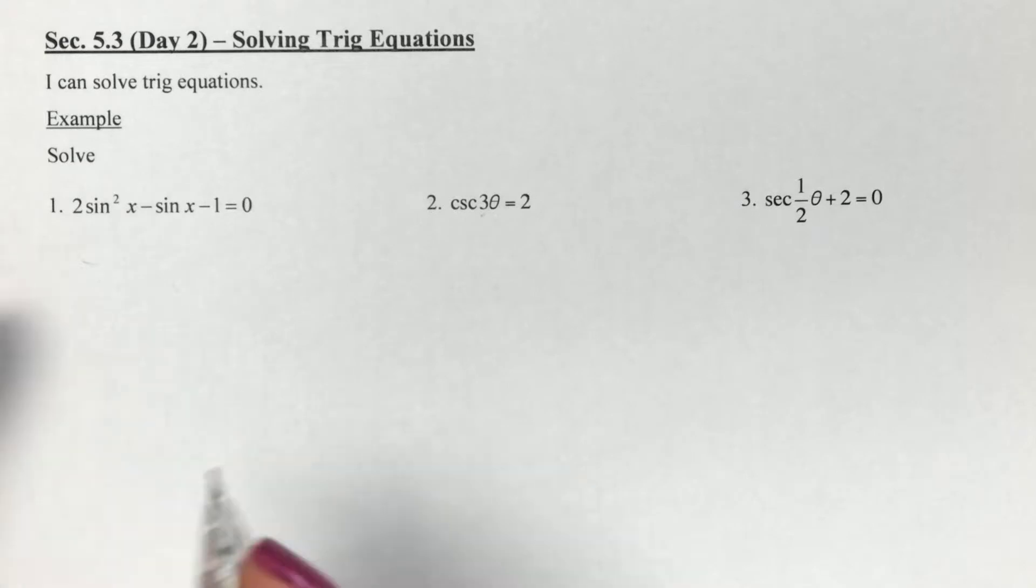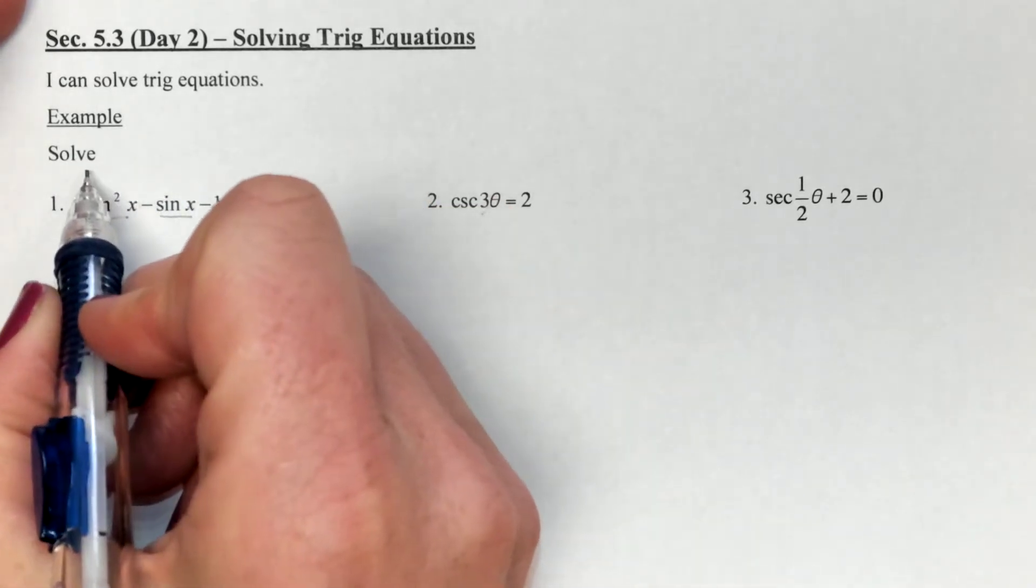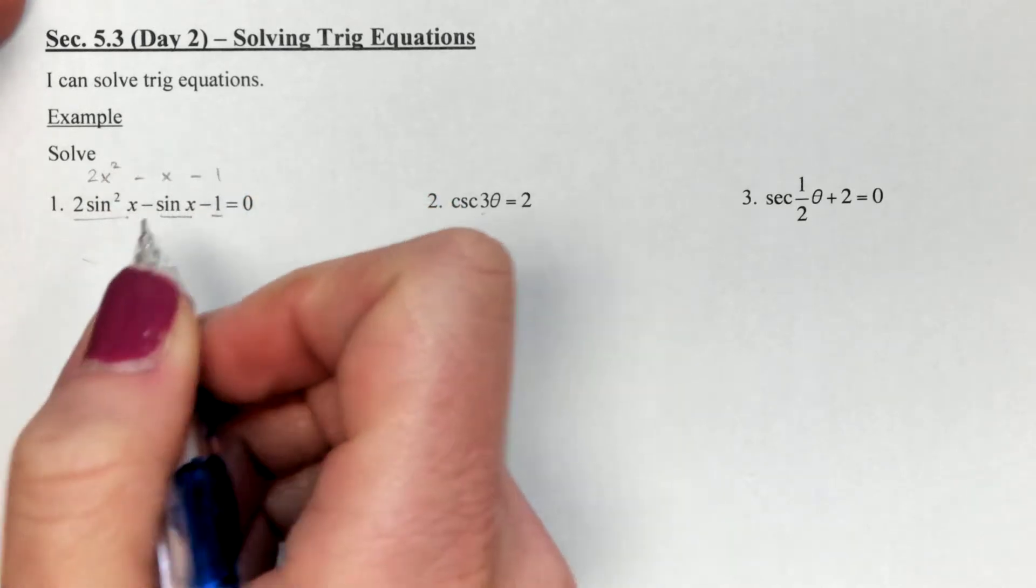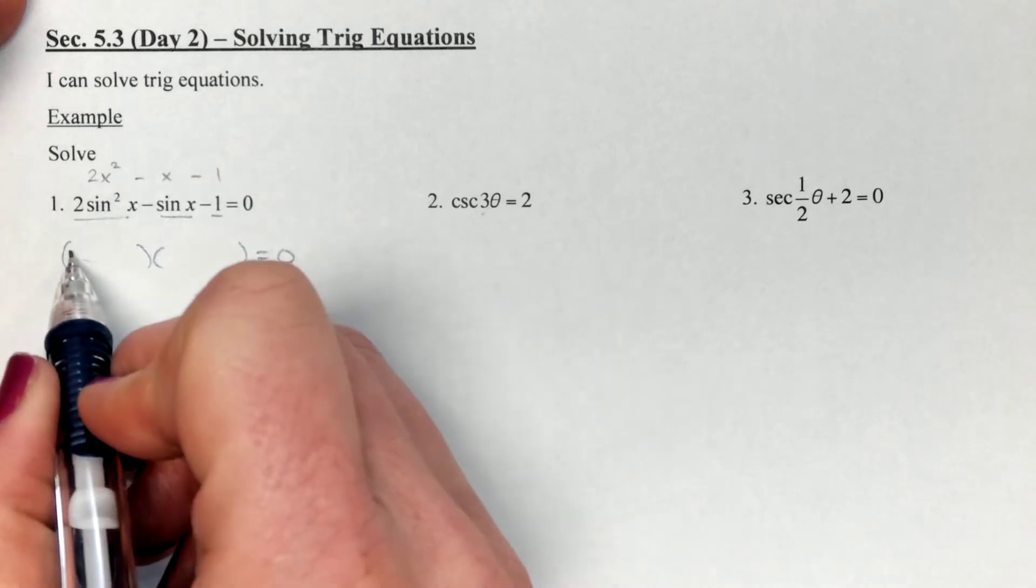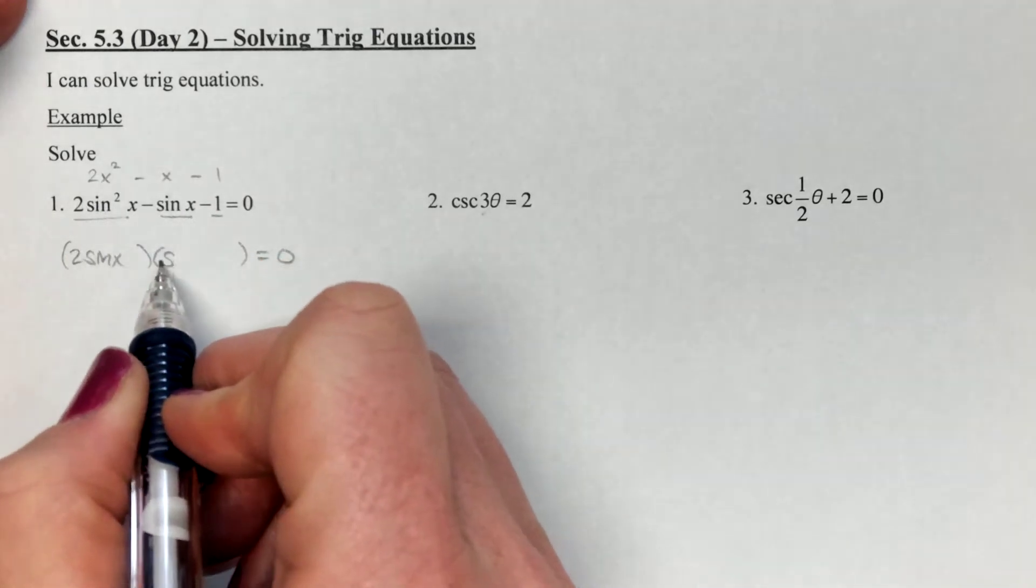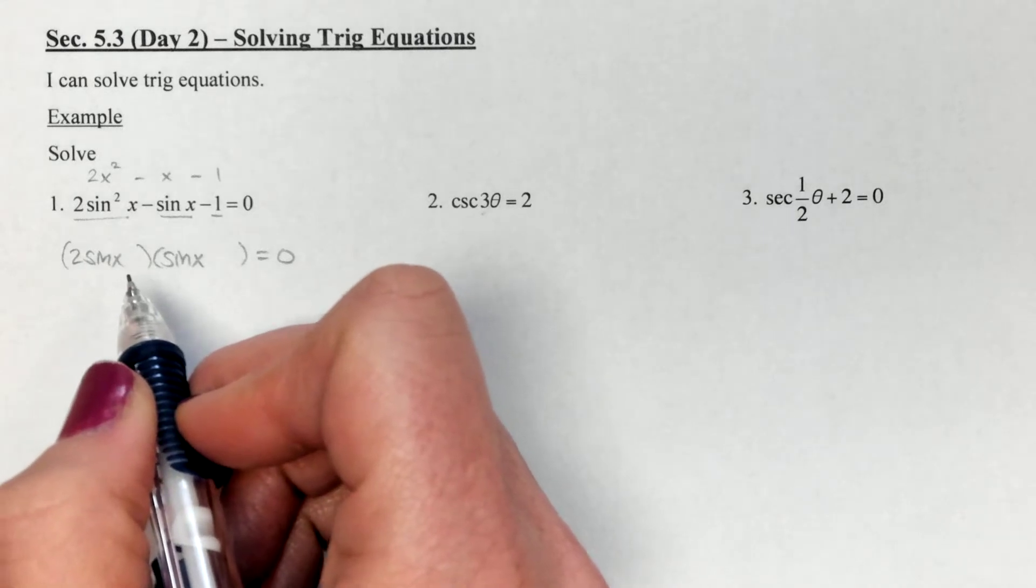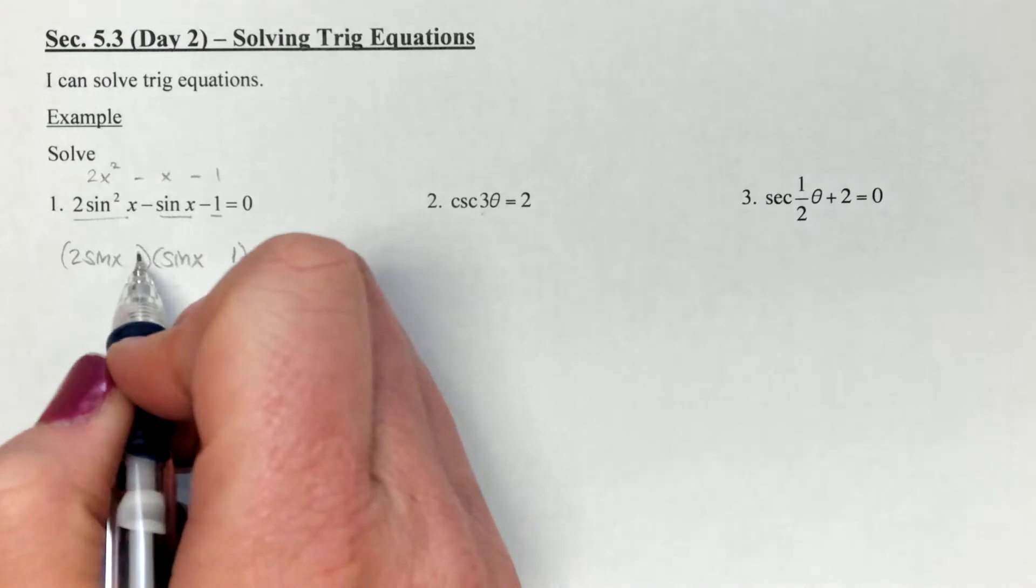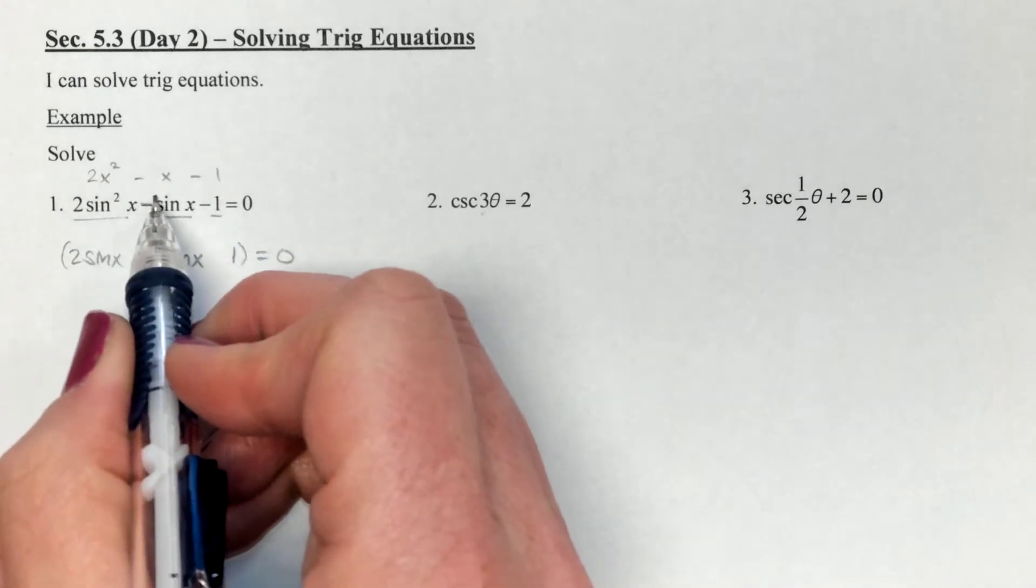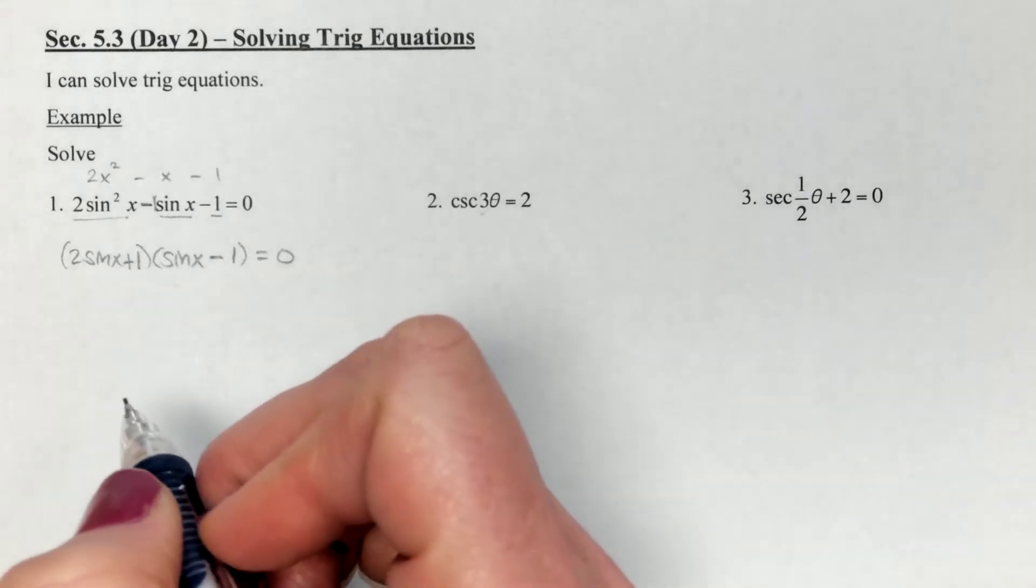The first one has three different terms, and anytime you've seen that in the past, if I just take the signs out and simplify it, this would be a factoring question. We'll have our 2sinx upfront and another sinx to make squared. Then we multiply to one, so the only way we can do that is with one and one. We have to add to negative one, so my two must be negative and my one would be positive.